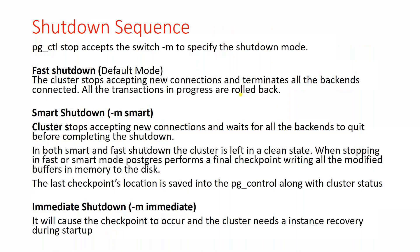So we have three options. Fast shutdown is the default option. Then there is smart shutdown — minus M smart — which stops accepting new connections and waits for all backends to quit. Backends are the processes started by Postgres that act as a link between your users and Postgres. In both smart and fast shutdown, the cluster is left in a clean state.